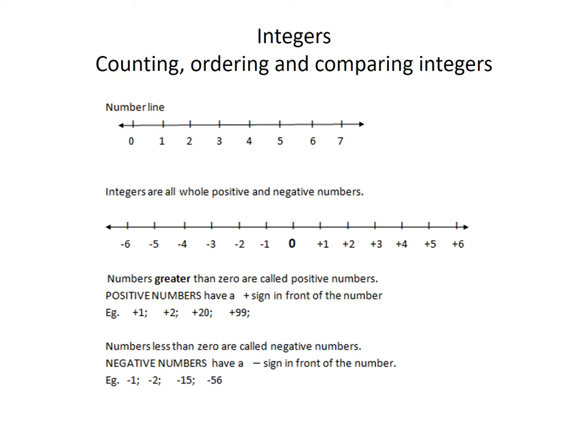Now, I said negative and not minus, and I didn't say plus. That is because minus and plus are operational signs. The negative and the positive are integers. Numbers greater than zero on your right are called positive numbers. Negative numbers have a negative sign in front of the number — for example, negative 1, negative 2, negative 15, and negative 56.